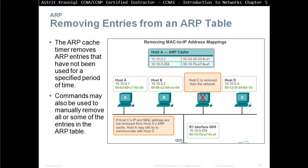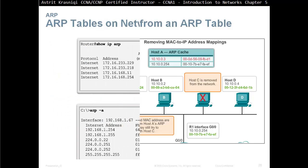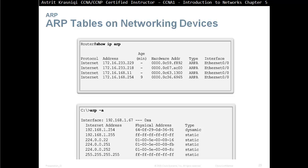Removing entries from the ARP table: the ARP cache timer removes ARP entries that have not been used for a specific period of time. Commands can also be used to manually remove all or some entries in the ARP table. For example, 'show ip arp' on a router shows what IP addresses have been resolved to MAC addresses. On a Windows client machine, 'arp -a' shows what addresses have been resolved — you can see both static entries and dynamically learned ones.